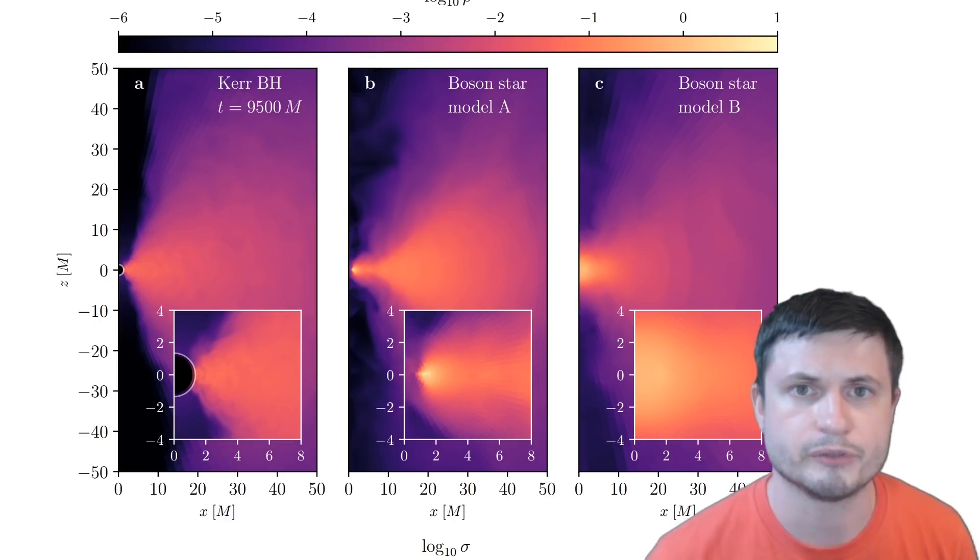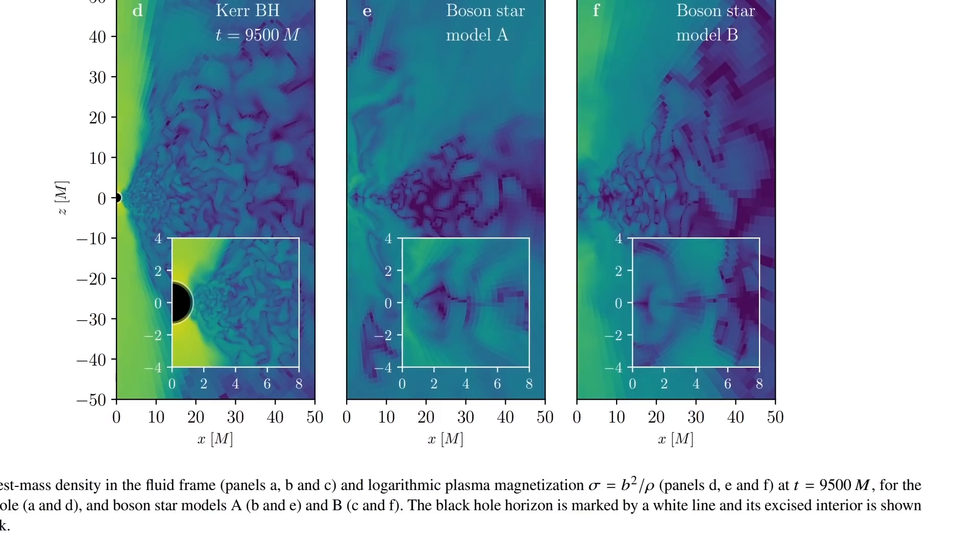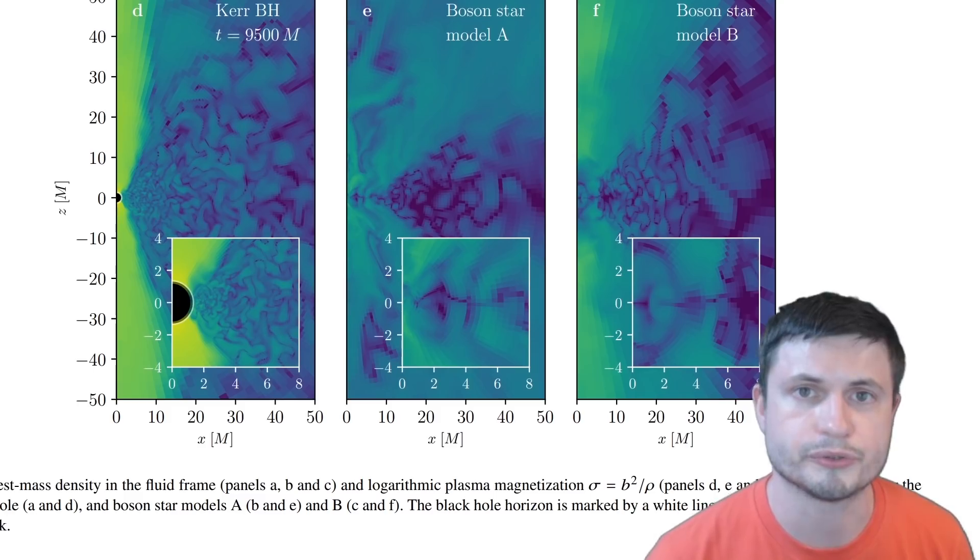One major difference, of course, is the absence of the event horizon which is present in black holes but not in boson stars. So if an event horizon is discovered, then it's definitely a black hole. If something else is discovered and has different motions around it, and most importantly, if it doesn't have this very active magnetic part, then it could be a boson star.